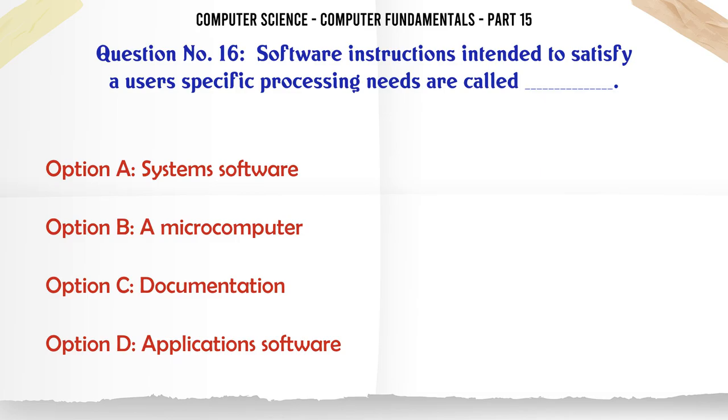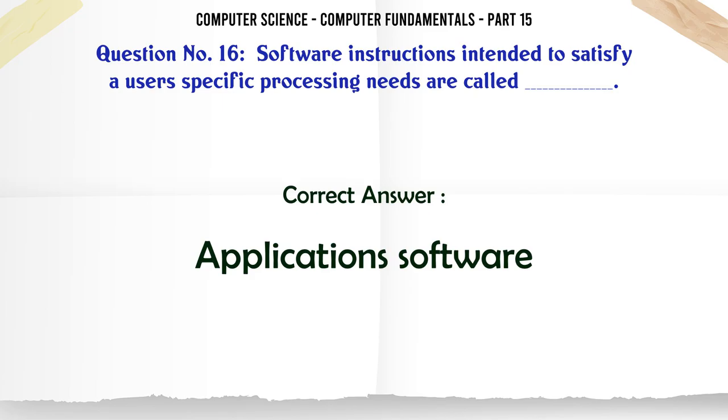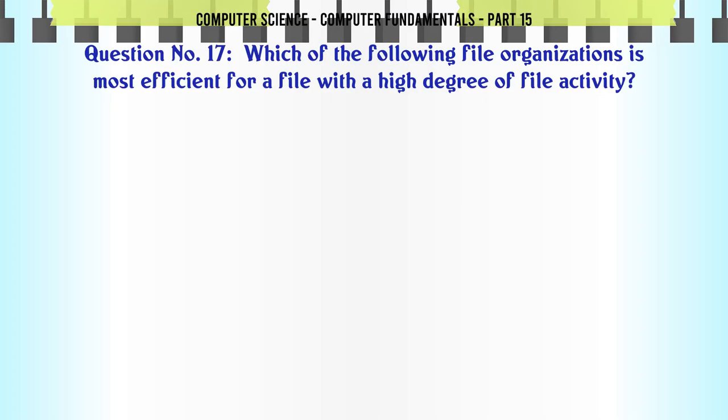Software instructions intended to satisfy a user's specific processing needs are called: A. Systems software B. A microcomputer C. Documentation D. Applications software. The correct answer is Applications software.